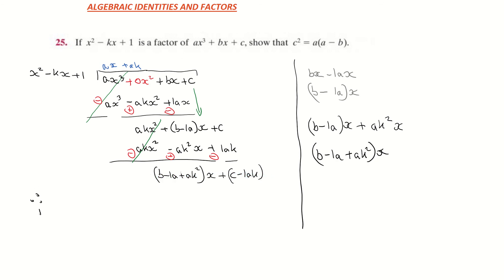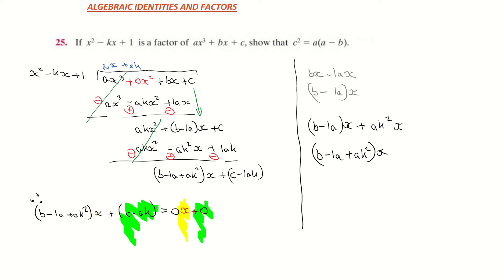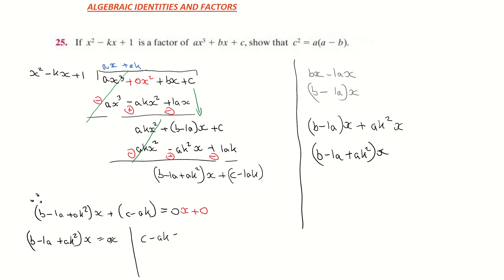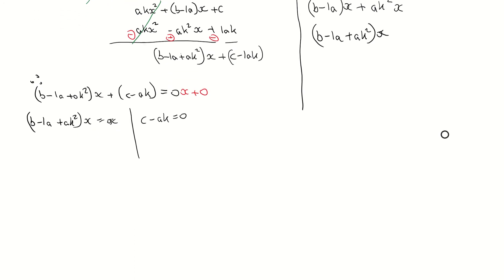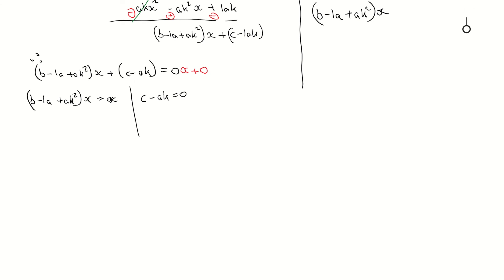So I set the remainder equal to zero: b minus a plus ak squared times x plus c minus ak equals zero. I write the right-hand side as 0x plus 0, using placeholders. Pairing coefficients: the x terms give b minus a plus ak squared equals zero, and the constant terms give c minus ak equals zero.